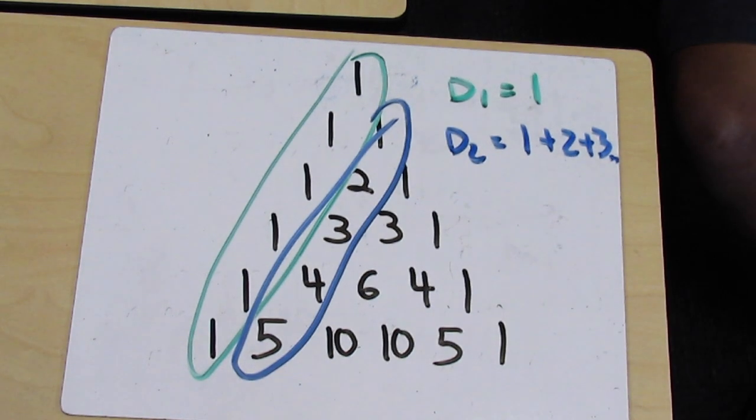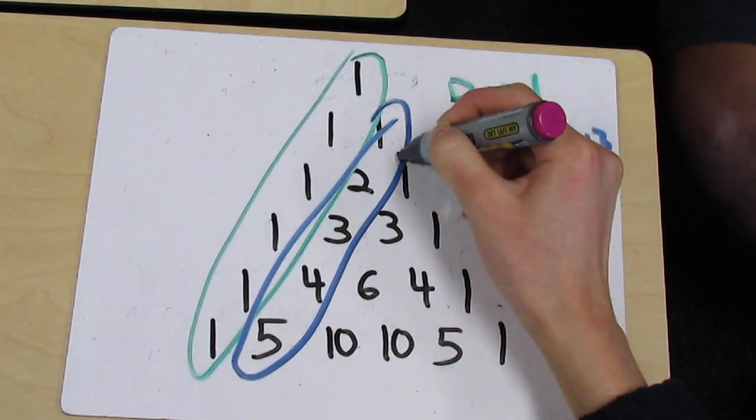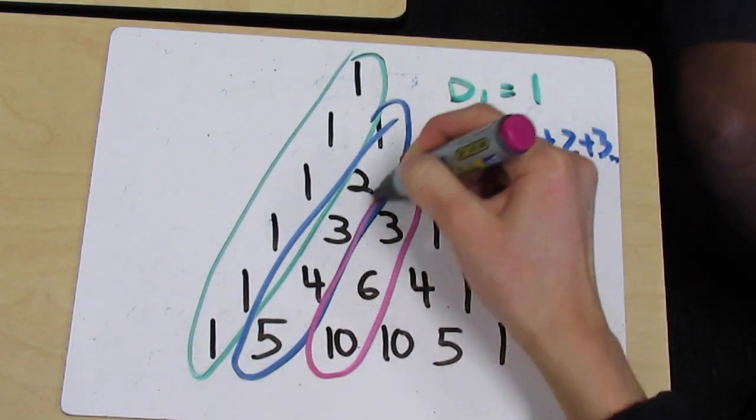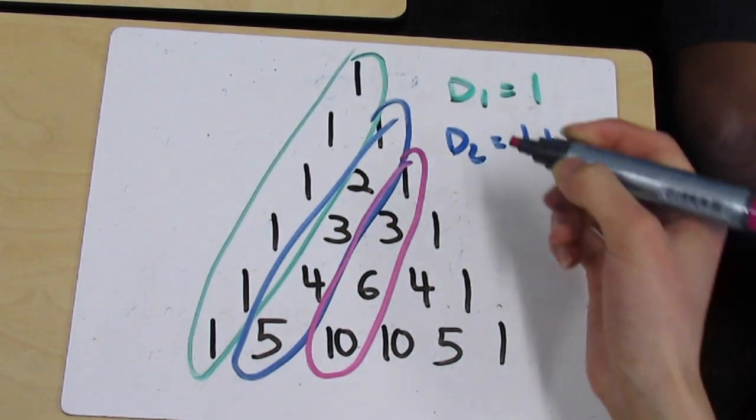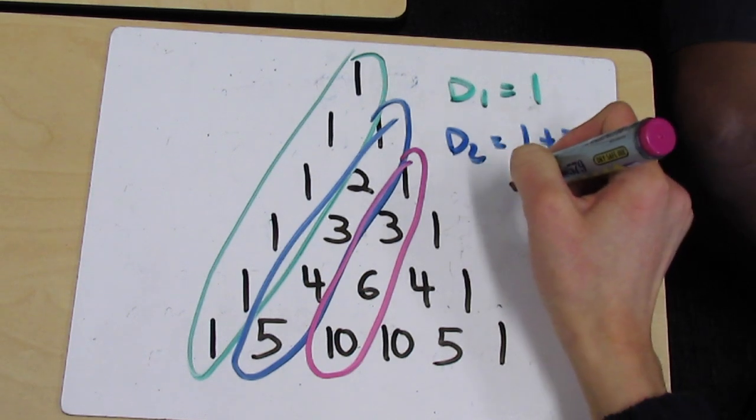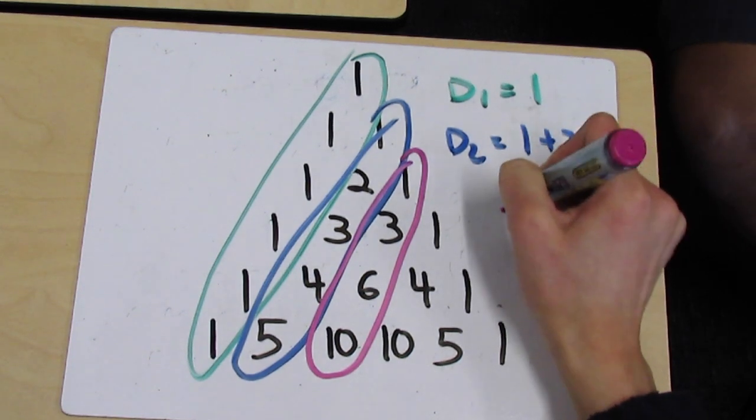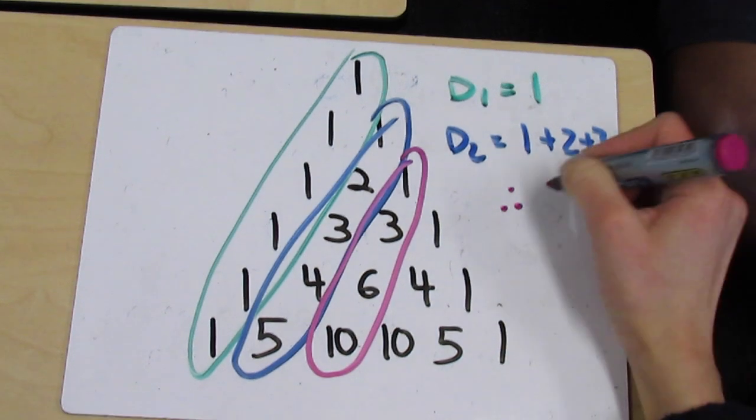The third diagonal is kind of interesting. It takes on the form of triangular numbers, and triangular numbers are numbers that you can make into a triangle. So with three, you can have three dots and make them into a triangle.